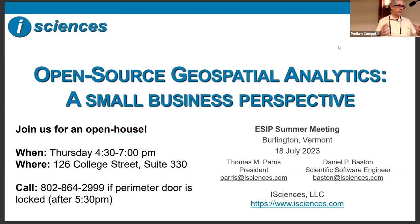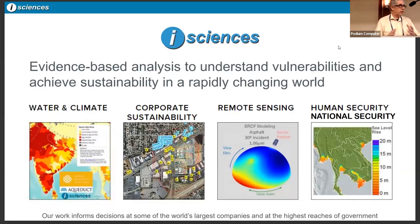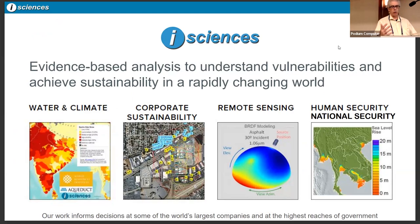More specifically, we tend to work over very large areas — either continental or global scale analytics. We use geospatial analytics in four topical domains that are highly overlapping: we do a lot of work in water and climate, corporate sustainability, human security, and national security. By human security, we mean water, food, energy, public health, and governance.